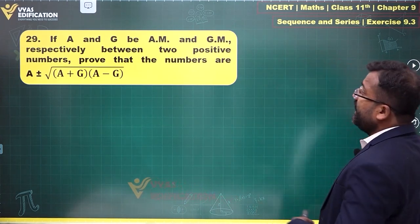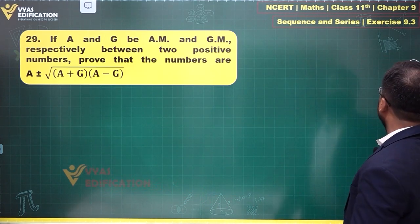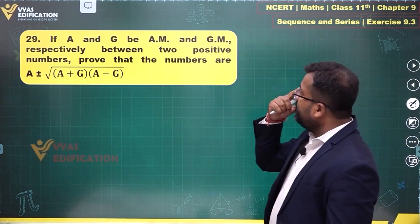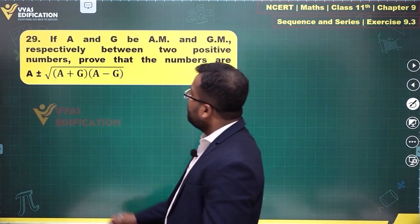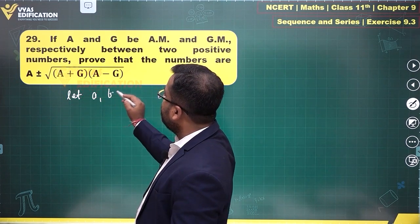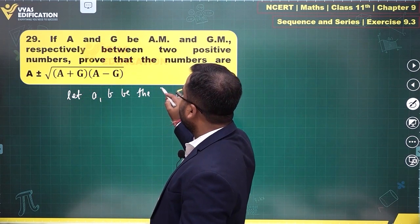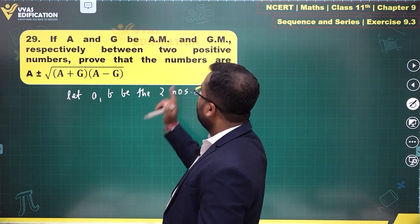Question number 29 says: if A and G be arithmetic mean and geometric mean respectively between two positive numbers, prove that the numbers are this and this. Let a, b be the two numbers. Arithmetic mean